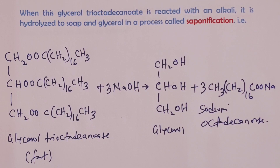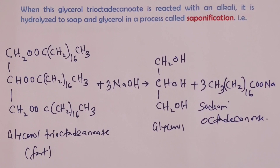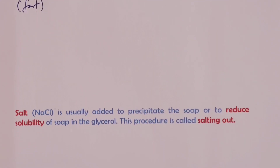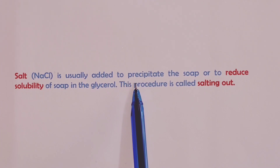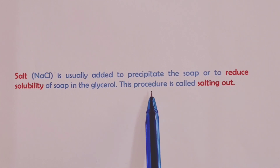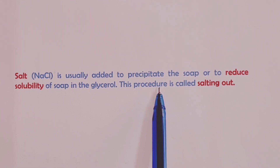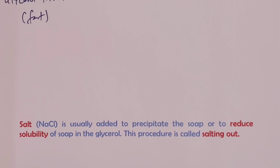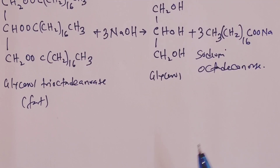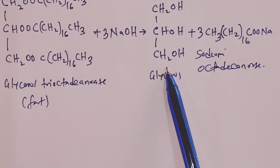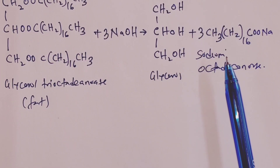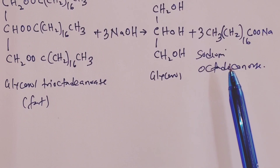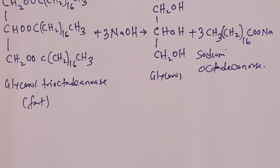It is worth noting that during saponification, sodium chloride (normal salt) is usually added to the mixture to precipitate the soap or to reduce its solubility in glycerol. This procedure is called salting out. Since our products include soap together with glycerol, the soap may tend to dissolve in glycerol, so we precipitate it out through the addition of sodium chloride.